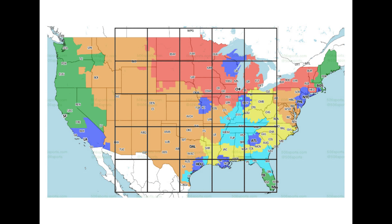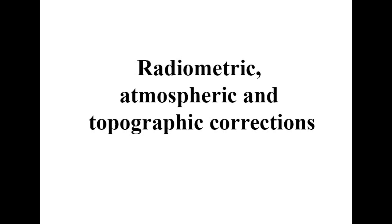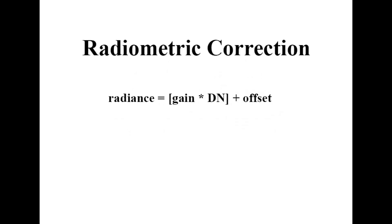First in this category, I want to talk about radiometric, atmospheric, and topographic corrections. For topographic corrections, all you really need to know is essentially just the elevation and where the sun is in the sky. For radiometric correction, we're dealing with noise — environmental conditions affecting true reflectance of pixels. We use the standard calibration equation: radiance equals gain times the digital number, which is the pixel value from 0 to 256, plus the offset.